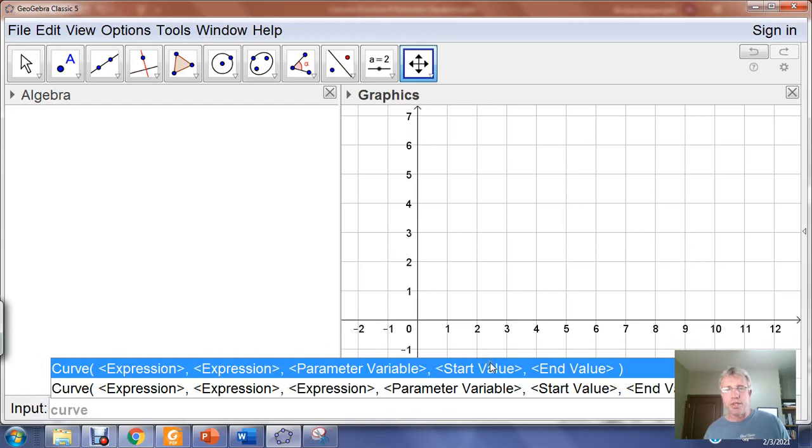If we were doing a three-dimensional space curve, we would do expression, expression, expression. This would give us X, Y, and Z positions, the parameter, the start and the end value. When GeoGebra prompts me for curve, expression, expression, I know that I have a two-dimensional space curve.